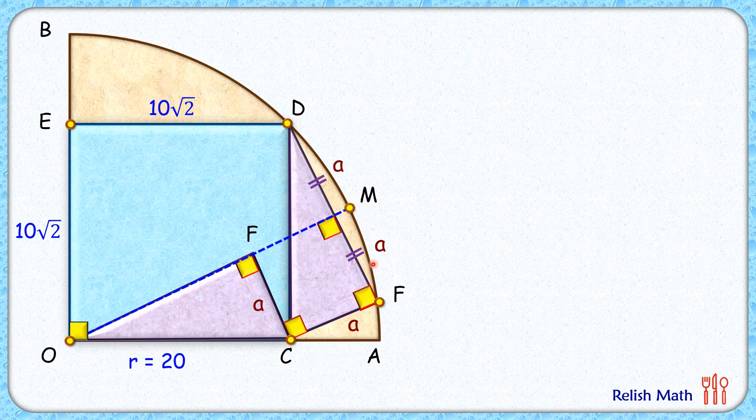And CD, we know, is 10√2. So in this triangle CFD, let's apply Pythagoras theorem. Let's put the value of CF and DF as A and 2A, and CD is 10√2.